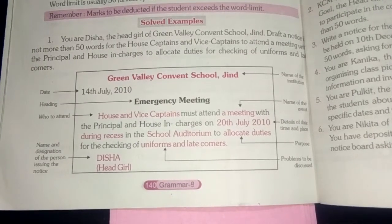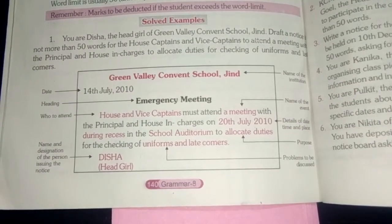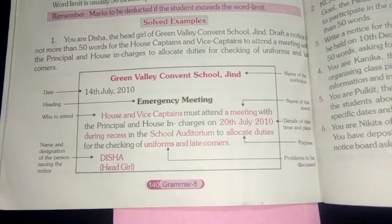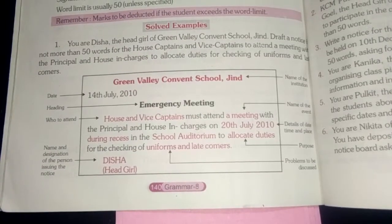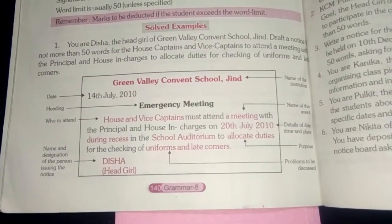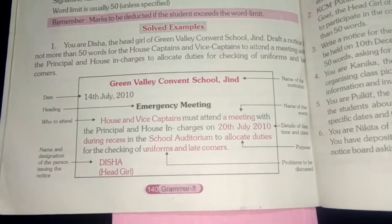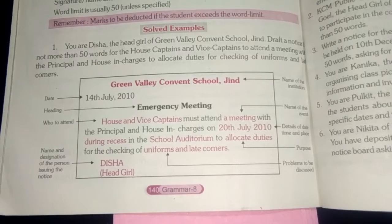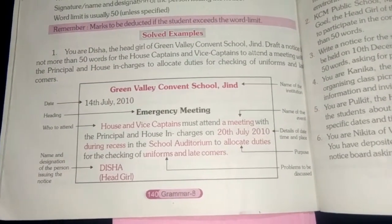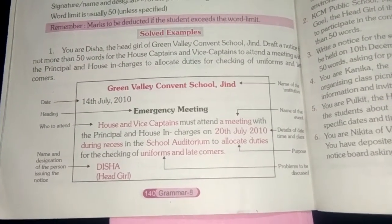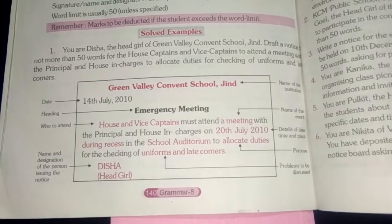At the end, you will add your name and designation — that is, whoever is issuing the notice will write their name, and the post or designation they hold will be written in brackets after their name.